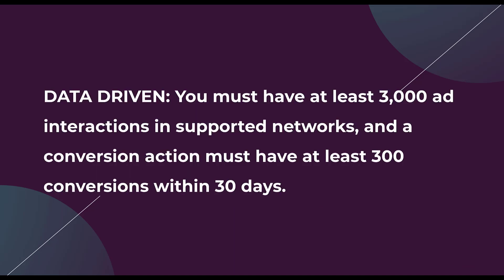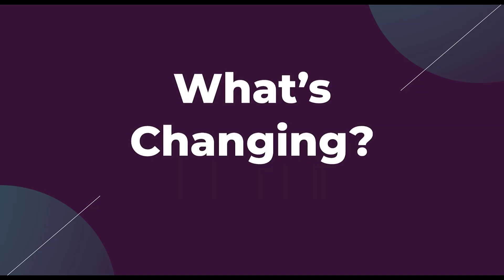Because it's data driven and has actual data behind it, there were some data limitations. You had to have had at least 3,000 ad interactions in supported networks, and that conversion action had to have had at least 300 conversions within the last 30 days. So depending on the size of your account and how often your conversions were being triggered, data driven was really hard to opt into. Typically Google would just alert you with a popup saying your conversion action was eligible for data driven attribution — otherwise you wouldn't have been able to select that model.